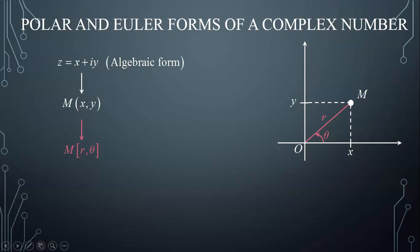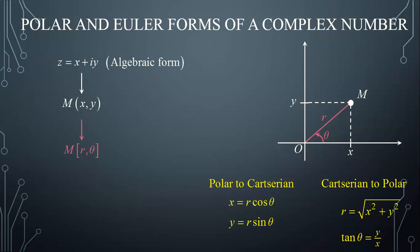And we've already seen in a previous lesson how to convert from polar coordinates to Cartesian coordinates and from Cartesian coordinates to polar coordinates. And using the polar coordinates of point M, we can represent the complex number Z using two possible forms, the polar form and Euler form.